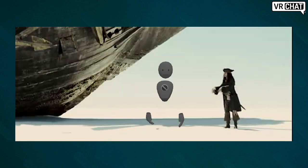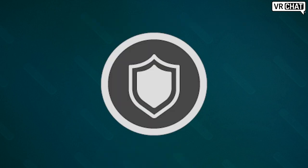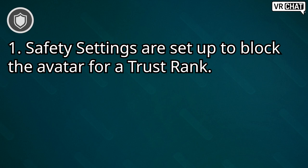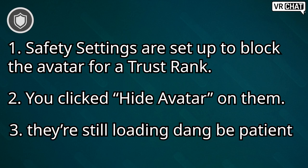Finally, if we have tried everything and we still have to show you the grey robot guy anyways, we'll show you this shield icon. Most often, you'll see this icon in three cases. Number one, you've used safety to block a rank's avatar. Number two, you've manually set someone to hide avatar. Or number three, you're really impatient and the avatar is still loading.